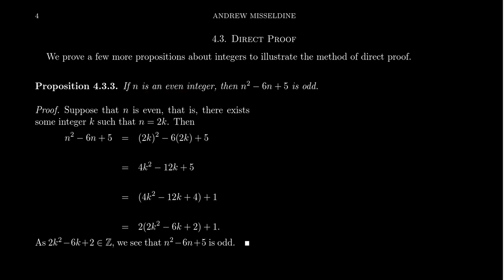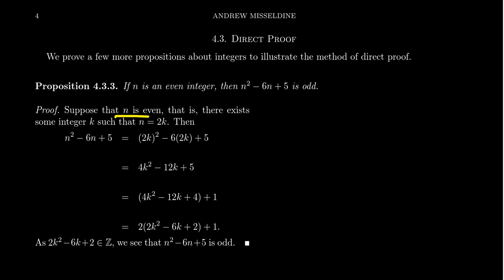That's exactly how we start: suppose that n is an even number. What does it mean for n to be an even number? There exists some integer k such that n equals 2k. The very first thing we do is state the assumption — assume n is an even number — and then unravel the definition: there exists some integer k such that n equals 2k.